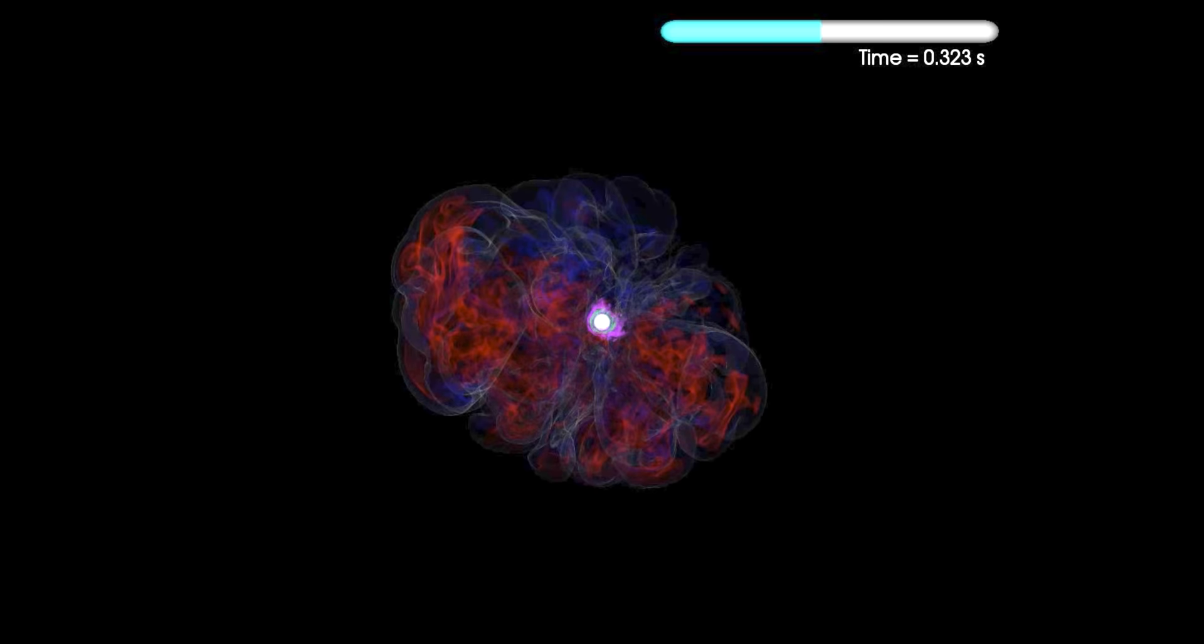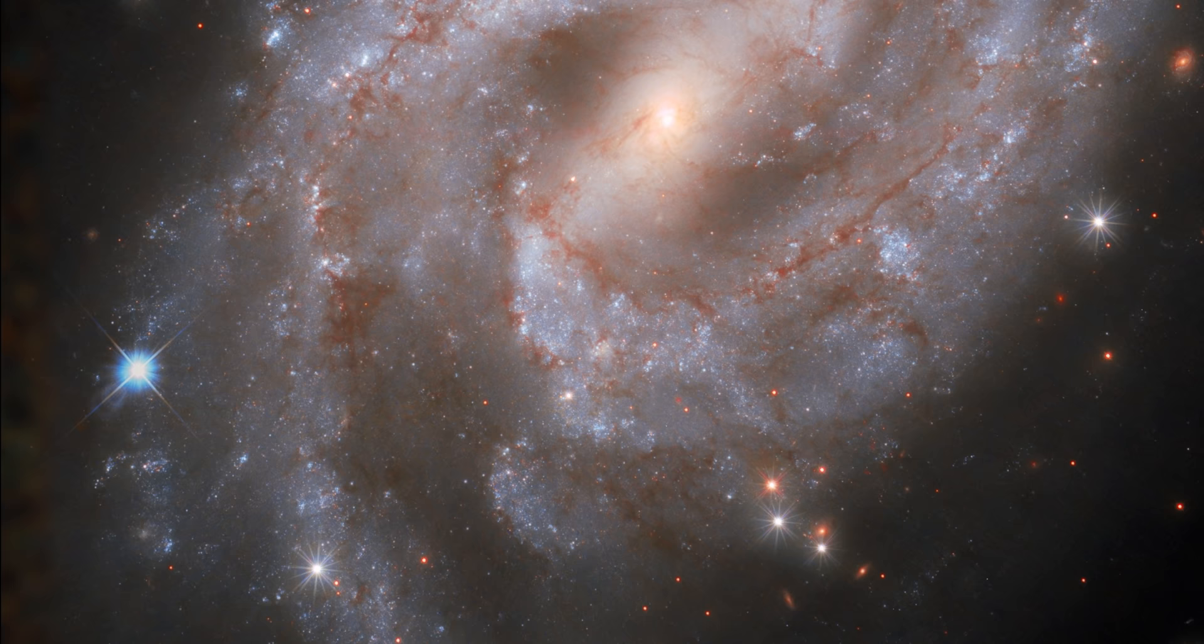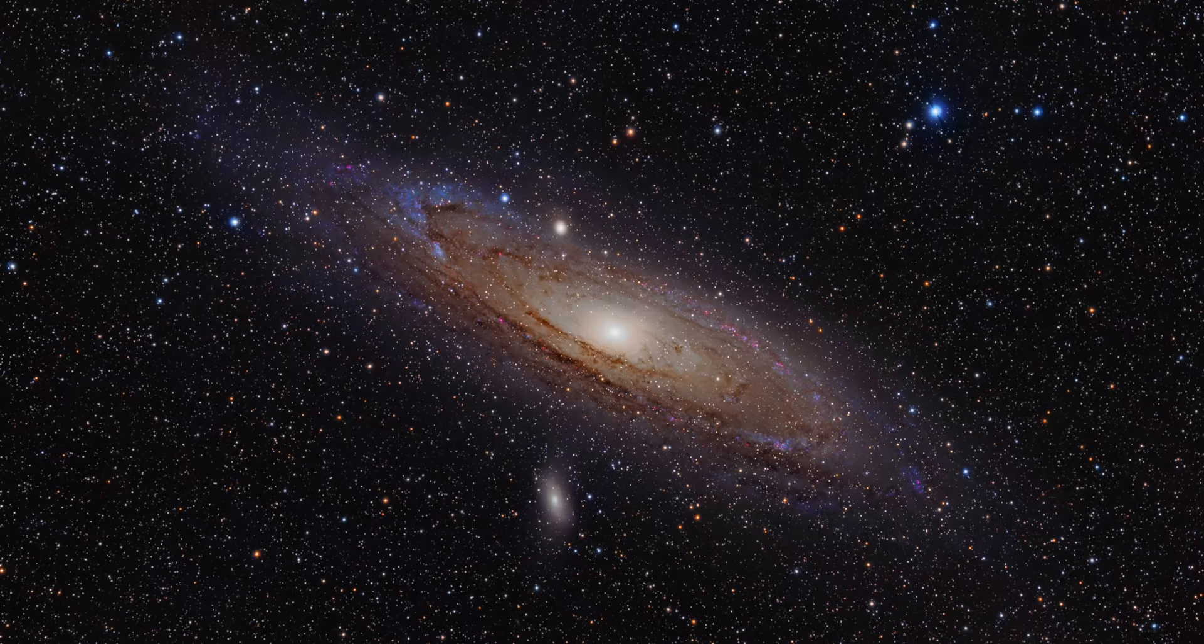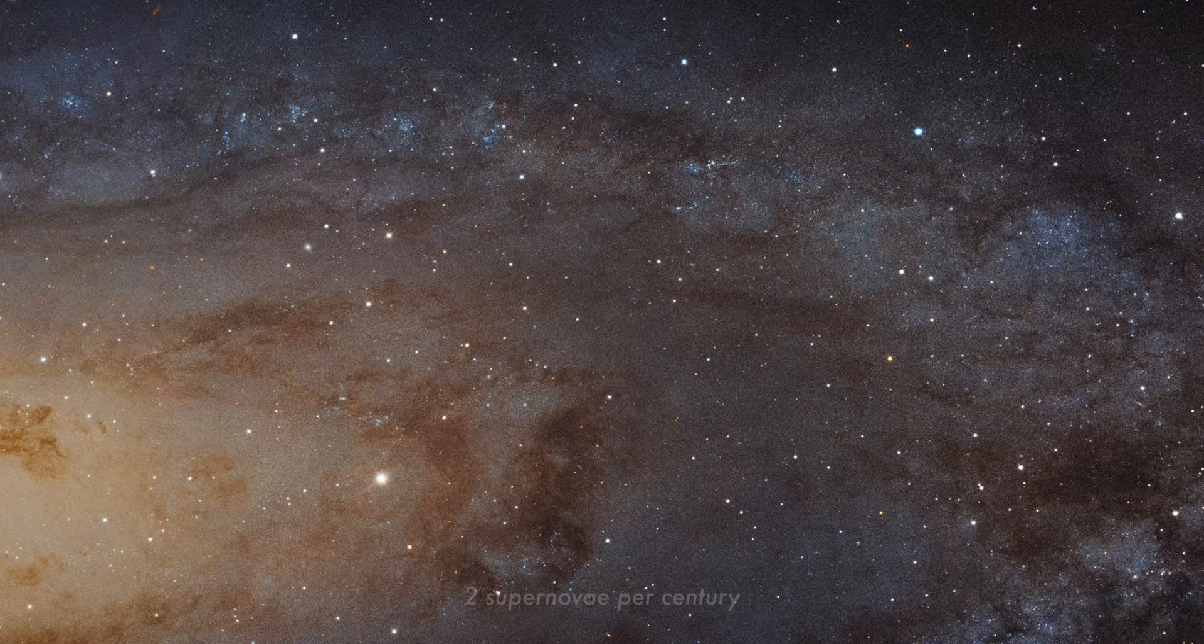A supernova can be as bright as a whole galaxy. And importantly, the light emitted follows a predictable pattern. It glows brightly for weeks, and then fades down over a period of months. But supernovae are rare. In any galaxy of a hundred billion stars or so, you can expect on average only two per century. So just try picking the star that's going to explode.